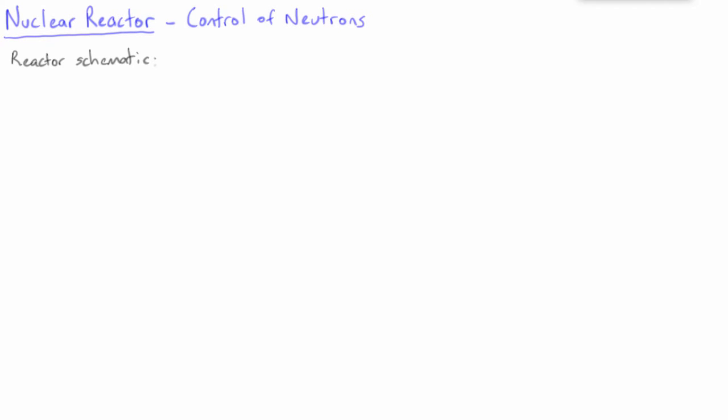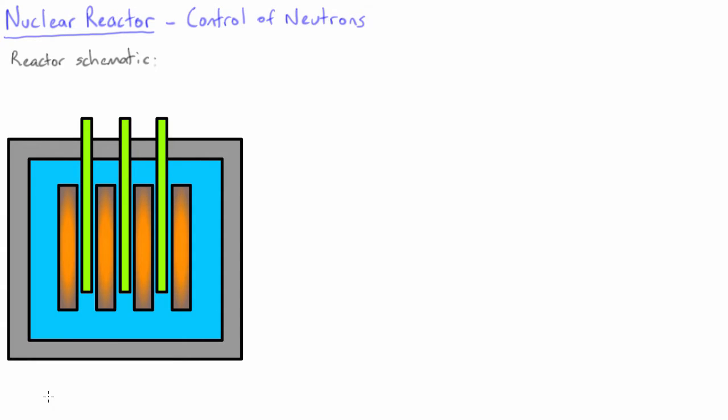A rough schematic of a fission reactor is shown in the picture on the left. The uranium fuel is usually in the form of rods and is usually enriched in uranium-235.